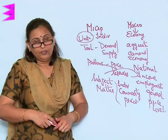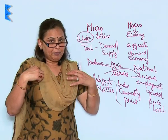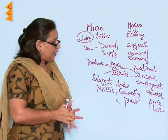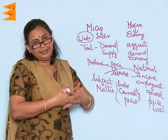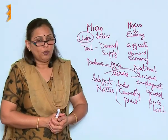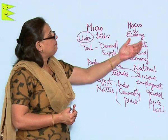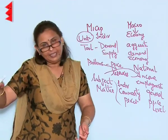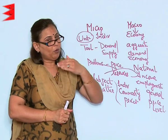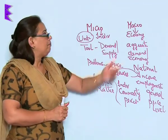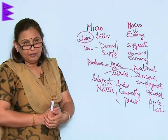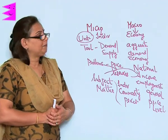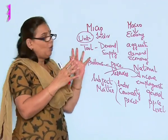Regarding subject matter, microeconomics focuses on individual commodity prices. For example, from an individual's point of view, one might say the prices of vegetables have really gone up. In macroeconomics, however, we study the general price level, which will be discussed in detail in the macroeconomics chapters.